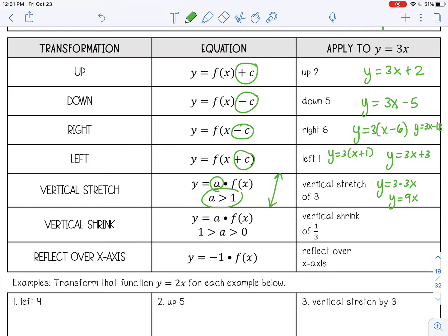For a shrink, you're still going to be multiplying. But the number is going to be between zero and one. And that's going to flatten out your line and make it rise more slowly. It's going to have a smaller, less steep slope. So I'm going to multiply by one third. So if I simplify that one third times three, that's just one x or x.